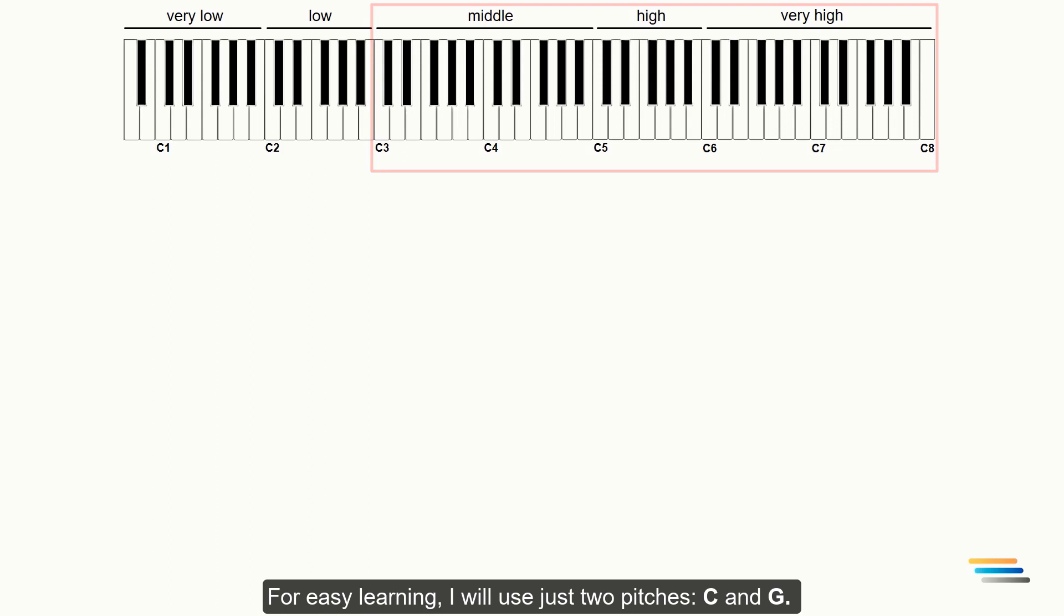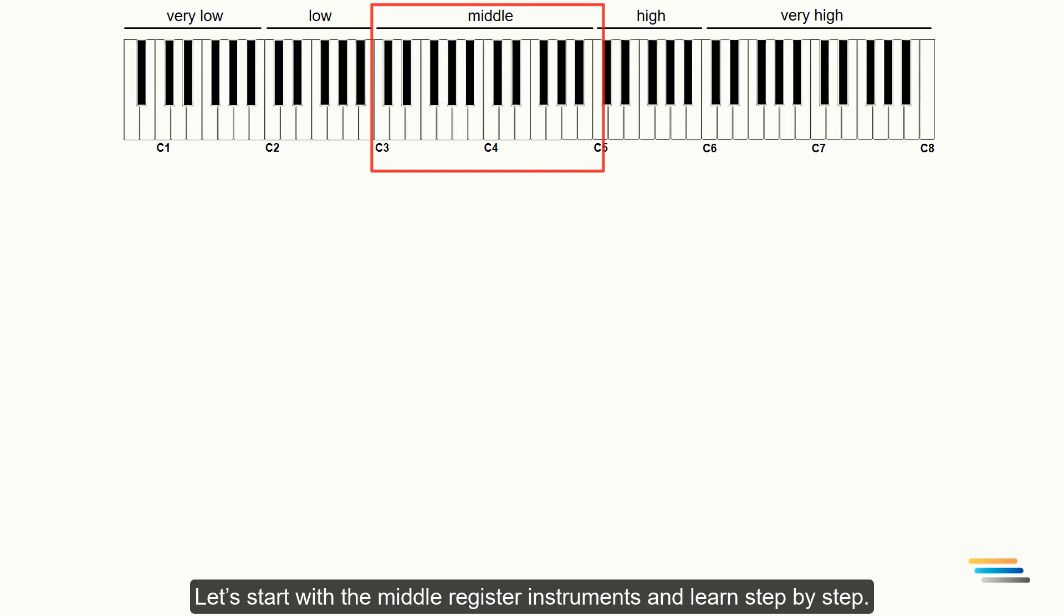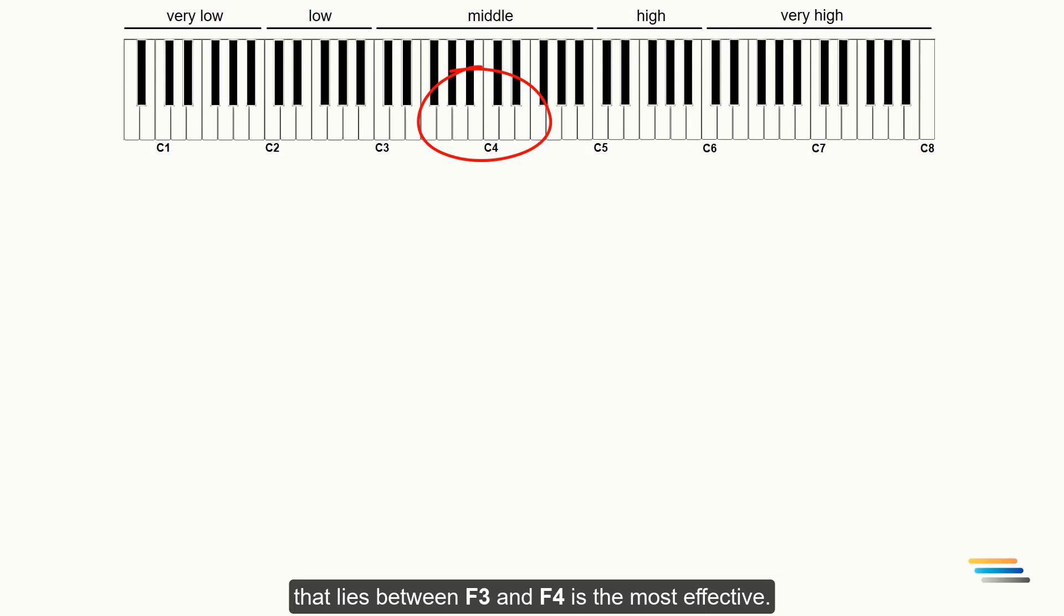Let's start with the middle register instruments and learn step by step. French horn. As you know, the second register of the French horn that lies between F3 and F4 is the most effective.